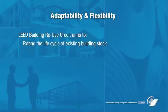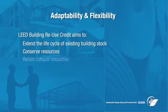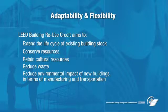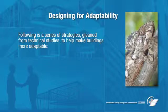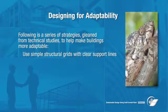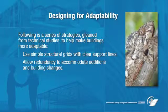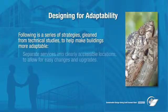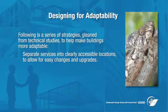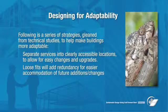The Building Reuse Credit aims to extend the lifecycle of existing building stock, conserve resources, retain cultural resources, reduce waste, and reduce environmental impacts of new buildings as they relate to materials manufacturing and transport. Following is a series of strategies to help make buildings more adaptable: optimize structural grids that allow for changing uses of space and use simple structural grids with clear support lines; allow redundancy to accommodate additions and building changes; over-designed structural capacity may allow alternative uses and options to extend the structure; and using separate structure and cladding allows independent alteration and replacement.